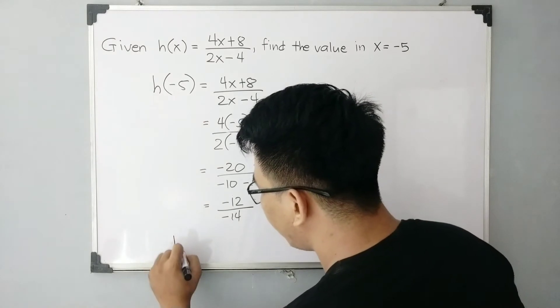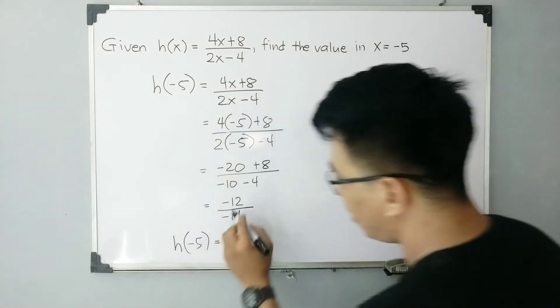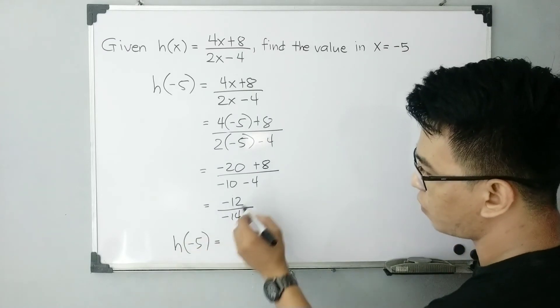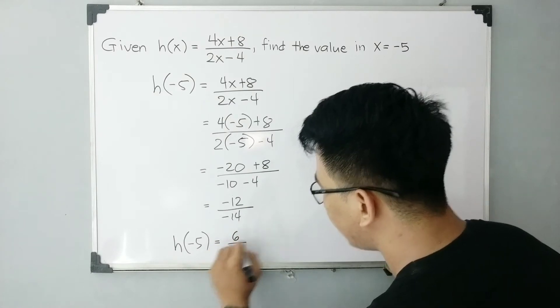So as you know guys, your h of negative 5 is simply negative divided by negative is positive. 12 over 14 is equal to 6 over 7.